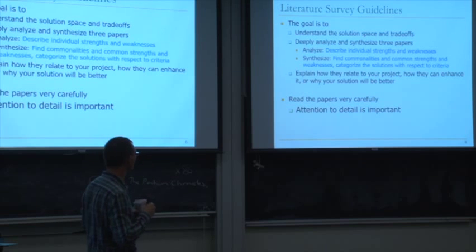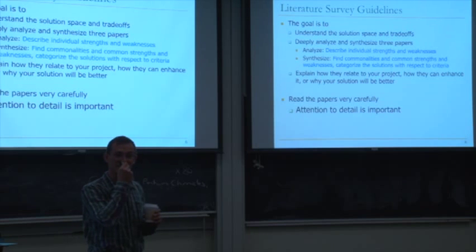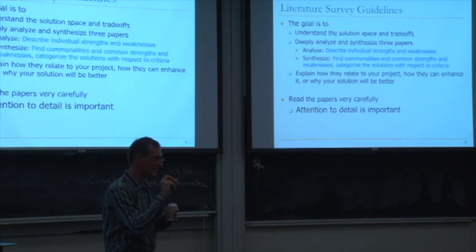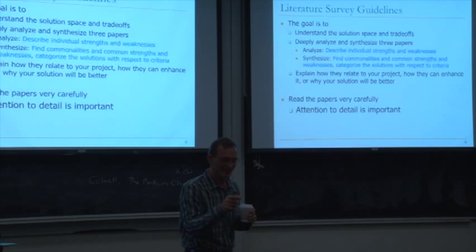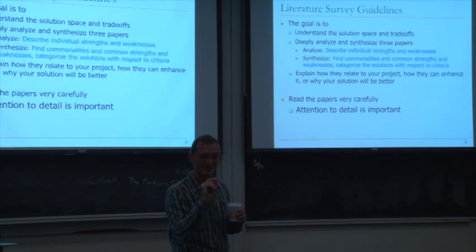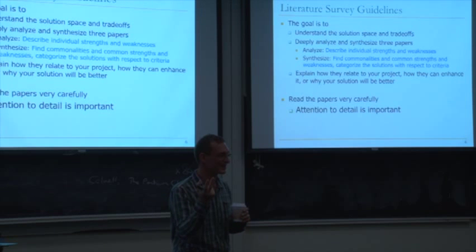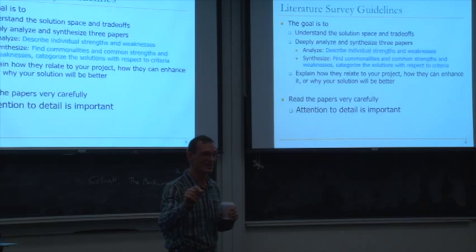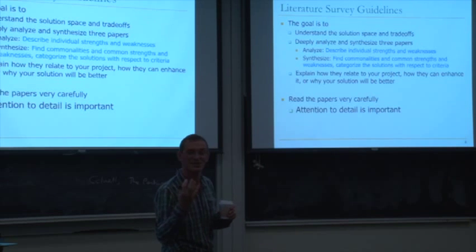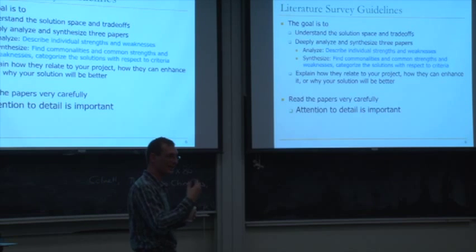One example of this is the Base-Delta-Immediate compression paper that you read a while ago. There is a categorization of the previous techniques as well as Base-Delta-Immediate compression. The categories are — do you remember? — complexity, effective compression ratio, and decompression latency. Previous works are categorized among those three dimensions, and you have check marks and X's in each dimension for different works. That's a good example of a synthesis of past related work. I'd like you to do something similar.